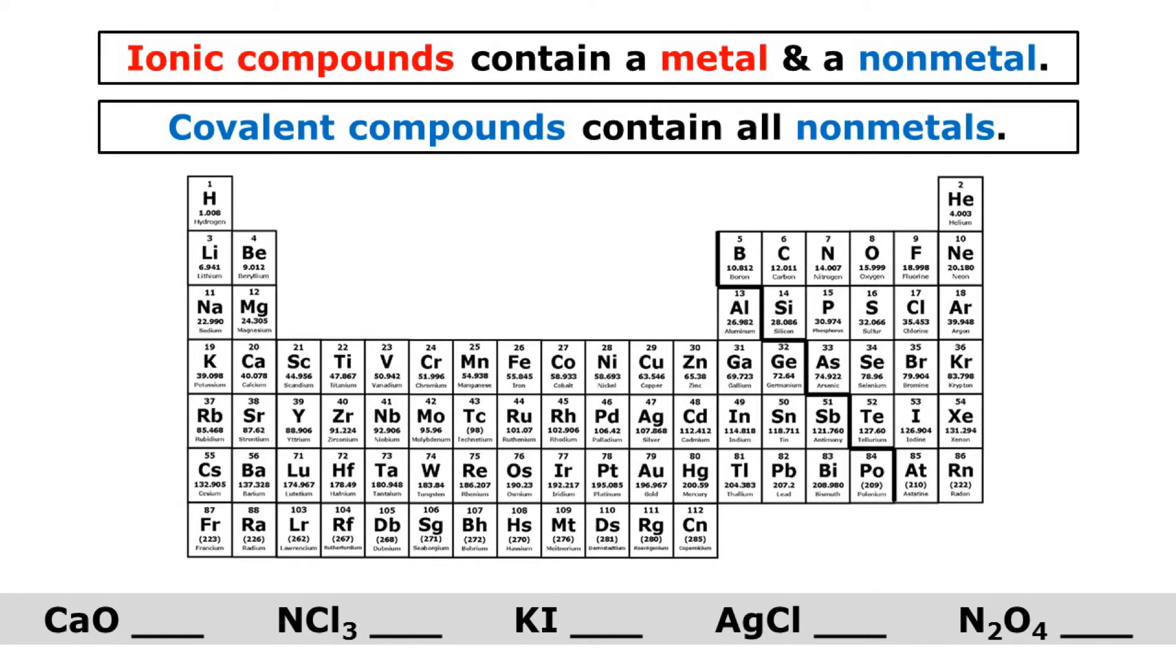Our first example is calcium oxide, so calcium and oxygen. Calcium is a metal and oxygen is a non-metal. So calcium oxide is an ionic compound because it contains a metal and a non-metal. It's that easy.